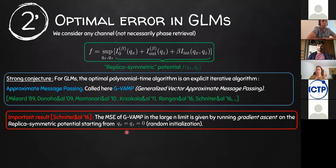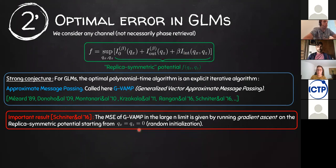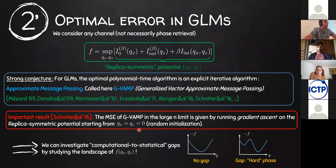q = 0 means MSE is maximal, corresponding to random initialization. If you start from a random initialization and do gradient ascent on the replica symmetric potential, you end up at the error achieved by AMP. This allows investigating computational gaps without any numerical simulations, simply by considering the landscape of this potential. I show two simple toy examples where in one case there is a gap and in the other there is not.